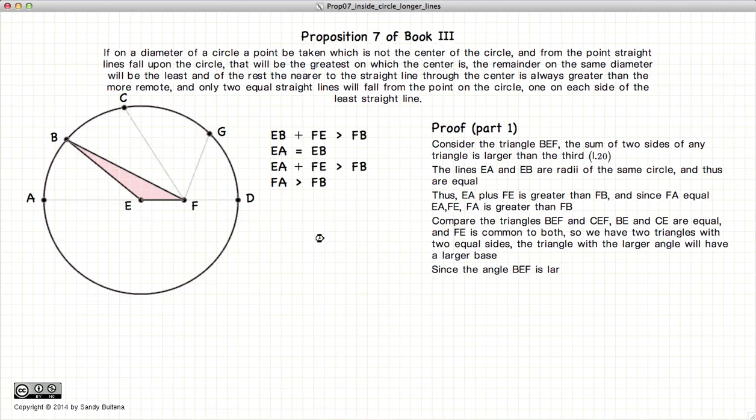Carrying on, let's look at these two triangles, the green one and the pink one. From Proposition 24 of Book 1, if you remember, if you have two triangles where the two sides are equal, and in this case they are, since CE and BE are radii of the same circle, EF is common to both triangles, the base will be larger in the triangle that has the larger angle. And since this pink triangle has the larger angle, BF will be larger than CF.